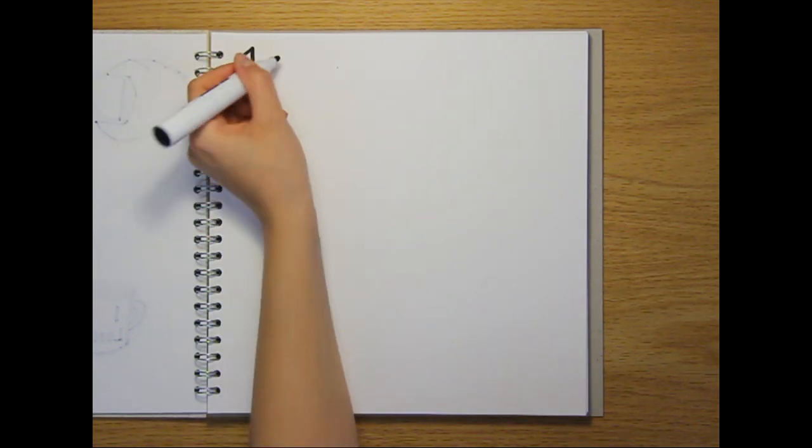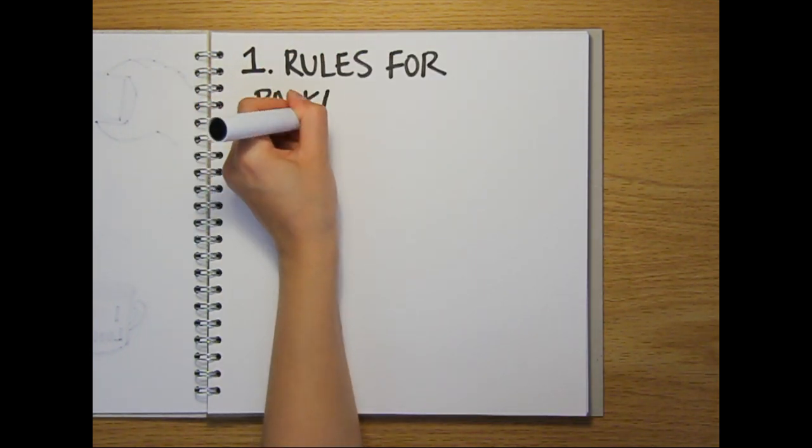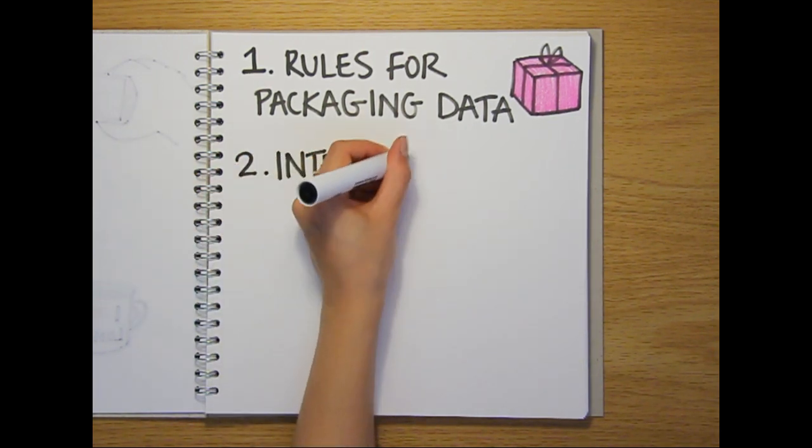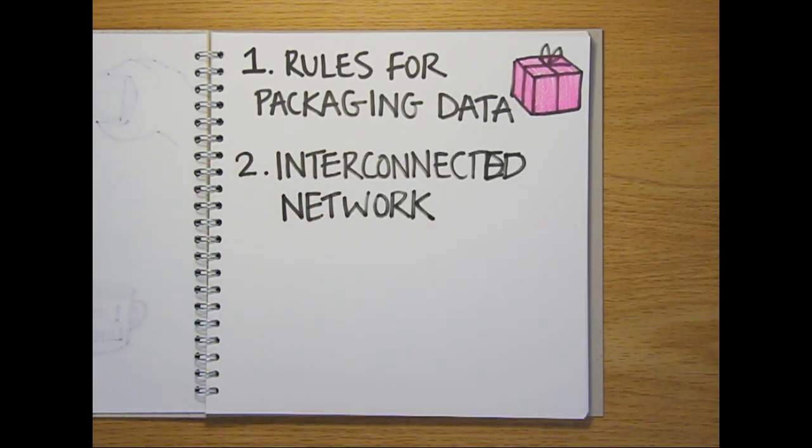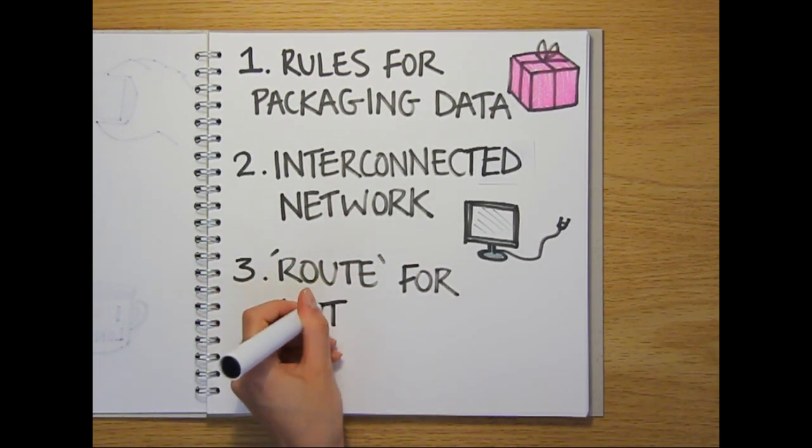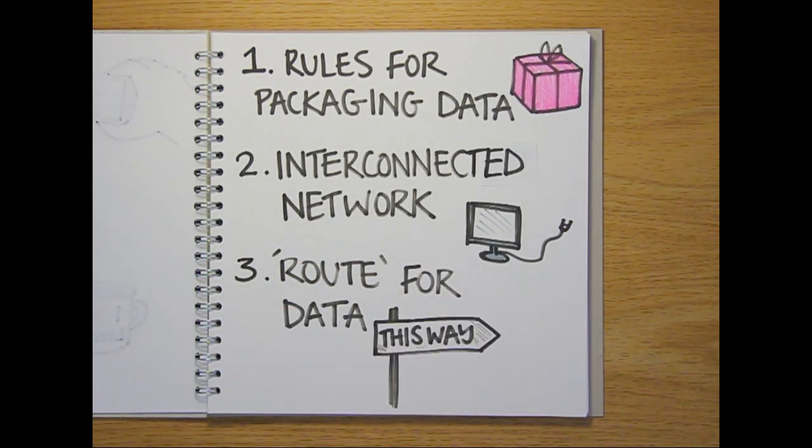To make this happen, we need three key things. One, a set of rules dictating how the data being sent and received is packaged. Two, an interconnected network over which the data will be sent. And three, a way to route the packaged data across the internet from the computer that's sending it to the machine that needs to receive it.